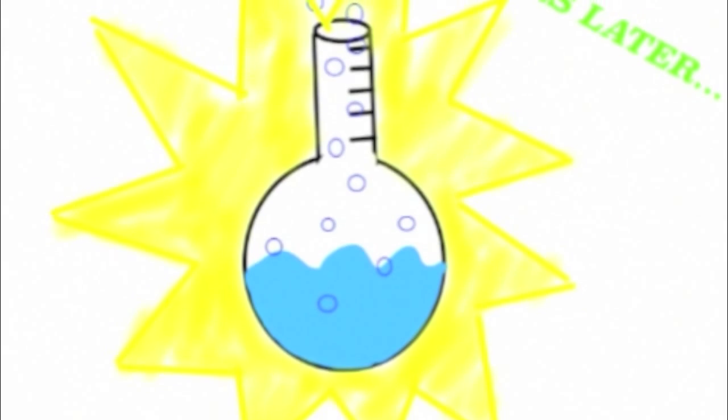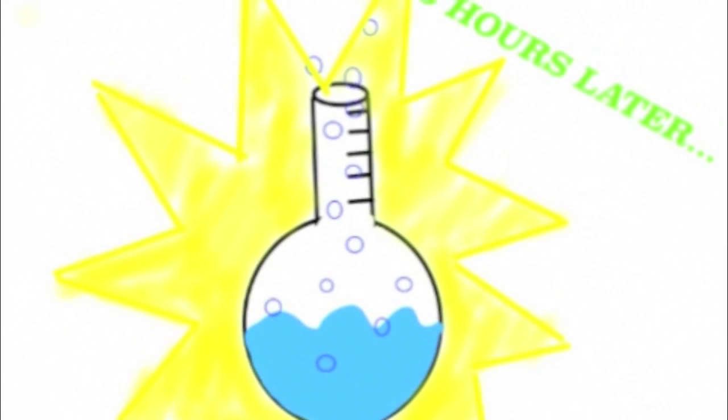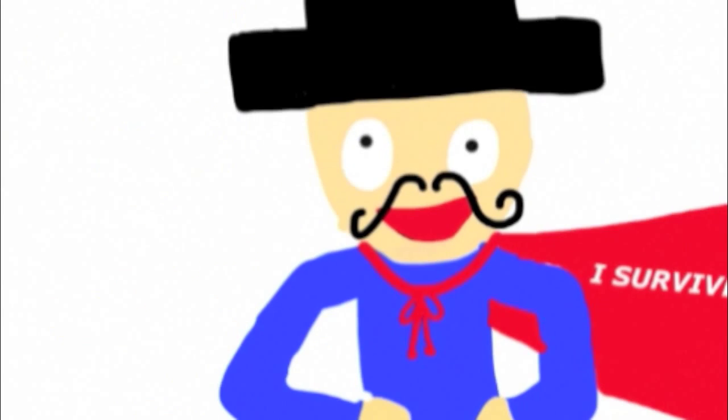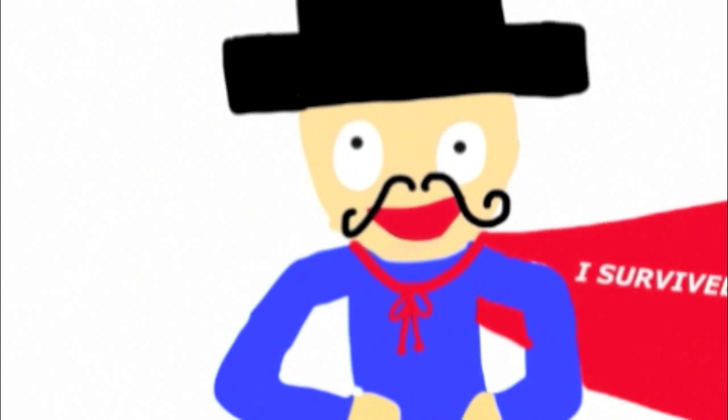In 3 hours, the genius doctor found an antidote for E. coli and used it to develop a vaccine. President Polynomial was cured.